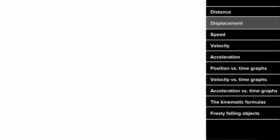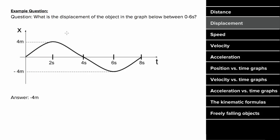What does an example problem for displacement look like? If you were given this graph and asked to find the displacement of the object between zero and six seconds, you wouldn't care that the object moved forward and backward. All you would focus on is that the initial position was zero, the final position at six seconds was negative four — meaning the displacement was negative four meters, since you ended four meters behind where you started.